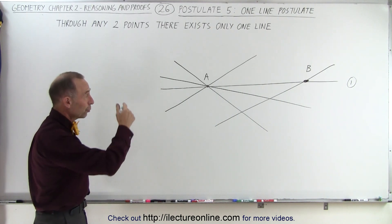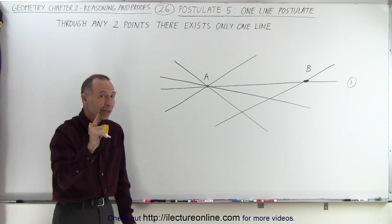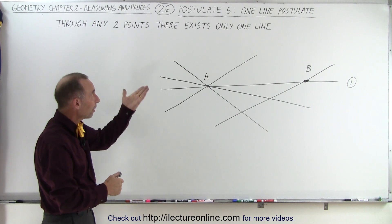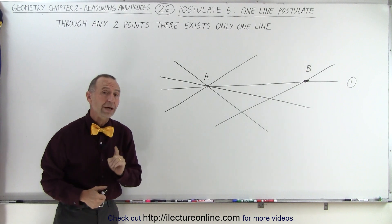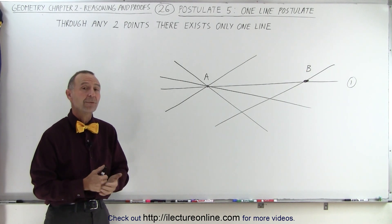We can draw lots of lines that go through A and not through B or through B and not through A, but there's only one line that goes through both A and B. And therefore we can say postulate number five: through any two points there exists only one line that will go through both A and B simultaneously. And that's how it's done.